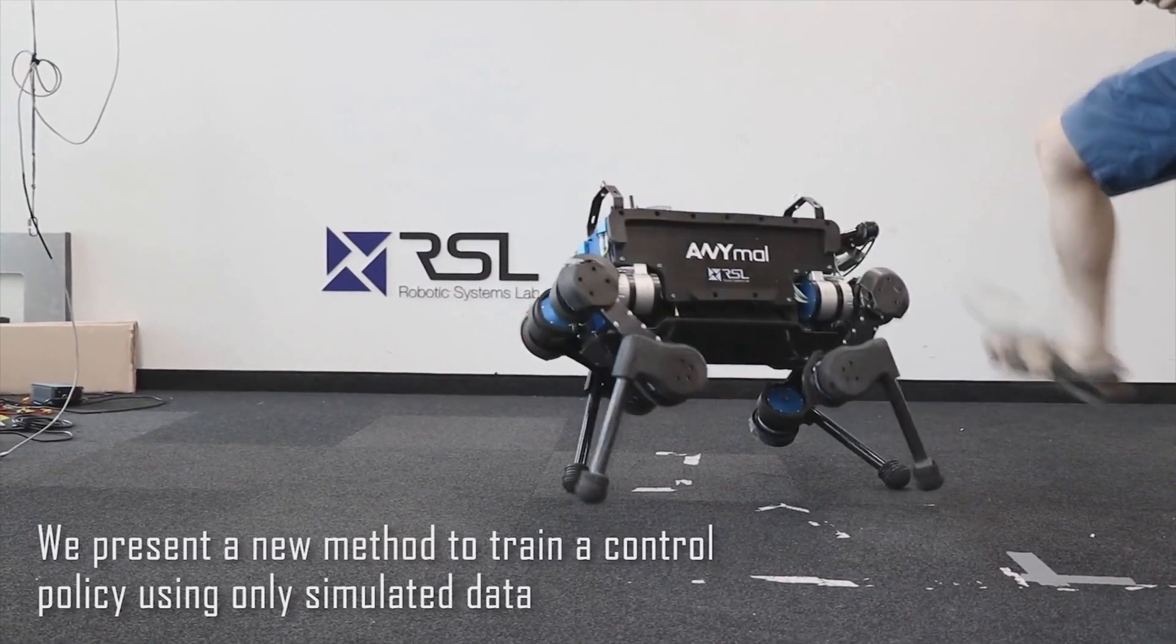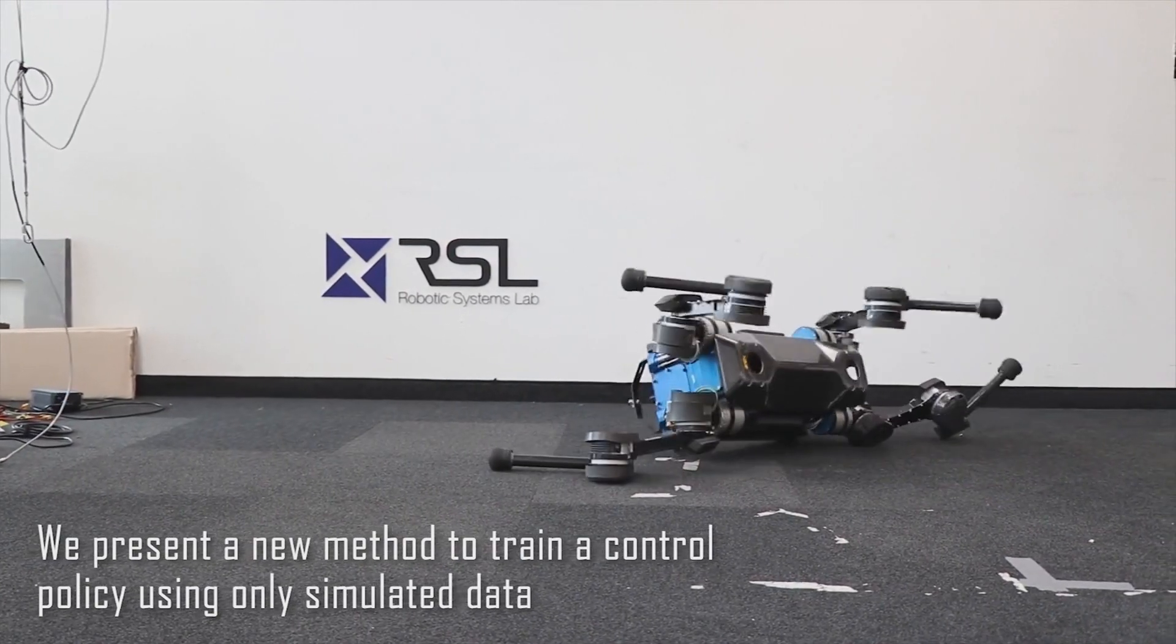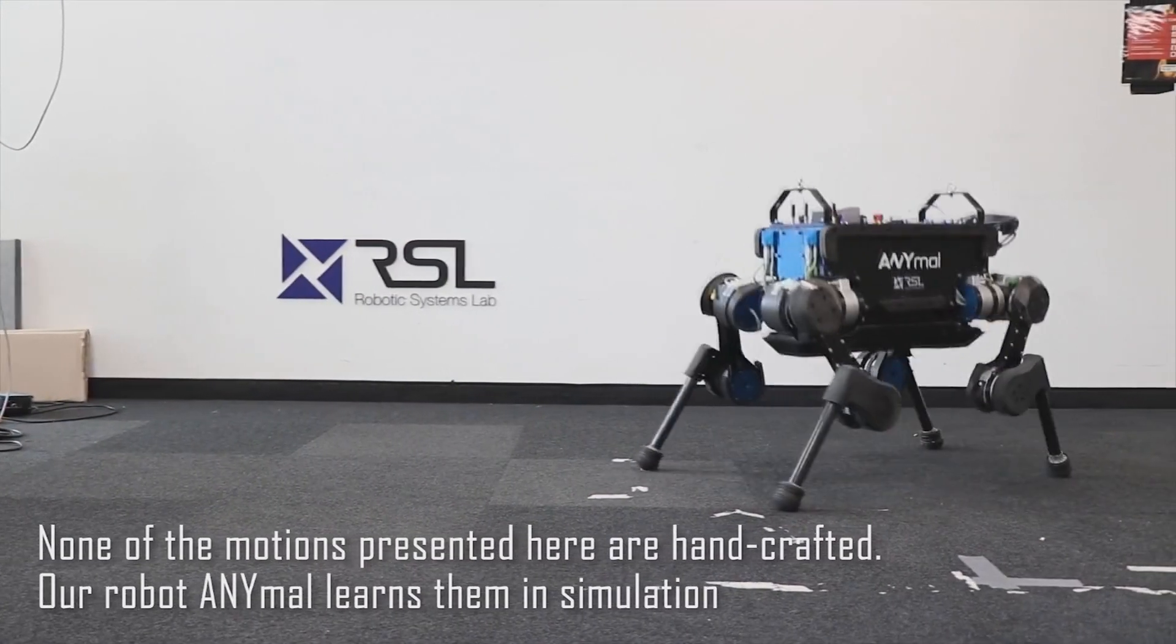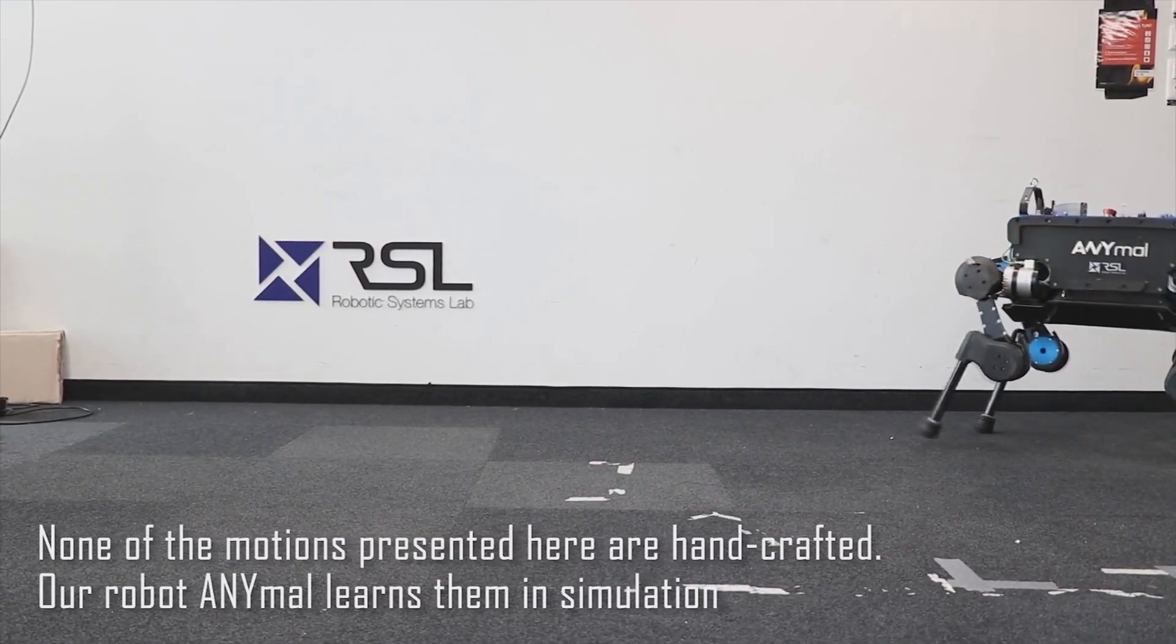We present a new method to train a control policy using only simulated data. None of the motions presented here are handcrafted. Our robot, ANYmal, learns them in simulation.